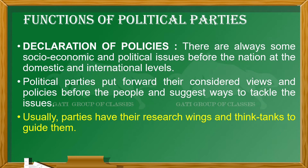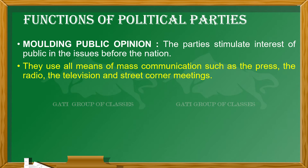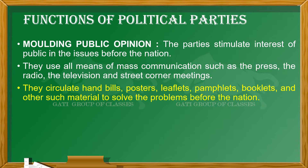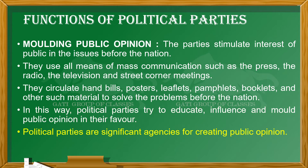The second function is molding public opinion. Every party must mold public opinion using mass communication such as press, news, radio, television, and street corner meetings. Many rallies are conducted at election time by different parties to help mold public opinion. They also circulate pamphlets, booklets, and paste posters on walls just to win elections. In this way, political parties try to influence people and mold their public opinion.